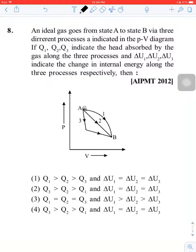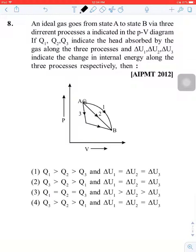If Q1, Q2, and Q3 indicate the heat absorbed by the gas along the three processes, and del U1, del U2, and del U3 indicate the change in internal energy along the three processes respectively, then what is the relation between Q1, Q2, Q3 and del U1, del U2, del U3? Let's start right now.